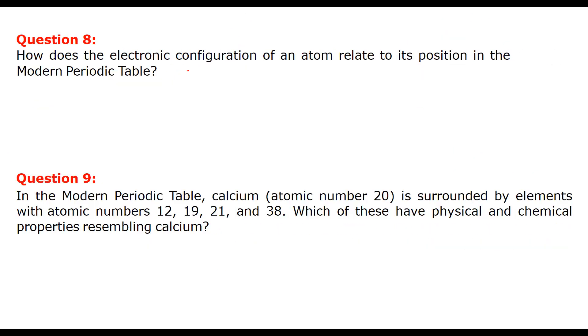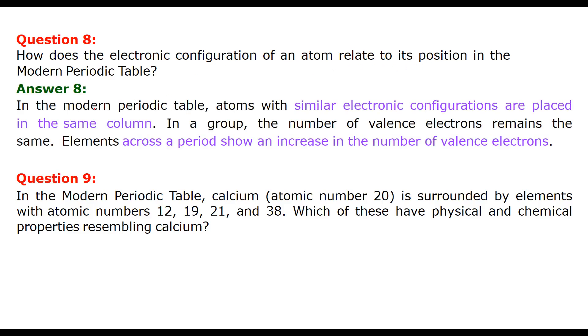How does the electronic configuration of an atom relate to its position in the modern periodic table? In the modern periodic table, atoms with similar electronic configuration are placed in same column. These are columns. So atoms with similar electronic configuration are placed here. While in a group, the number of valence electrons remain the same. So element across a period shows an increase in the number of valence electrons. This is a group, and this is a column. This is how it has to be answered.